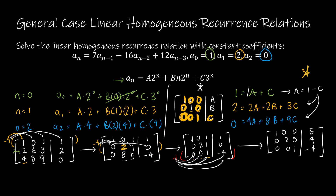I'm almost there. The only thing missing is a 1 in the second row's diagonal. I divide that row by 2 (or multiply by ½), giving [0, 1, 0 | 2]. Row 1 stays [1, 0, 0 | 5] and row 3 stays [0, 0, 1 | −4]. That's my solution.